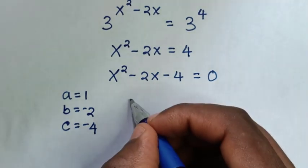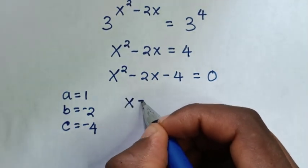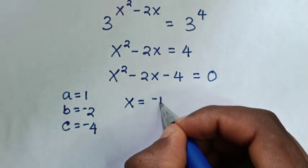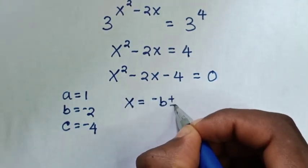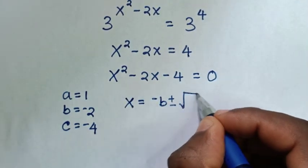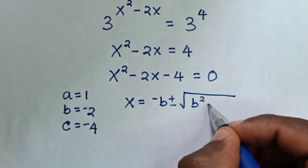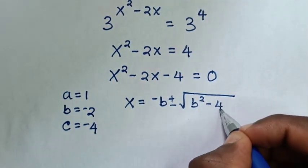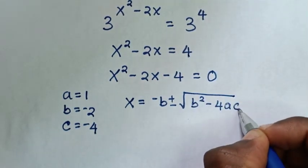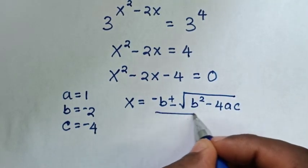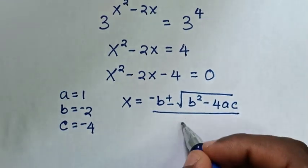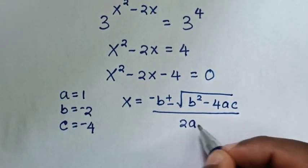Then from the quadratic formula, x is equal to negative b plus or minus square root of b square minus 4ac, then over 2a.